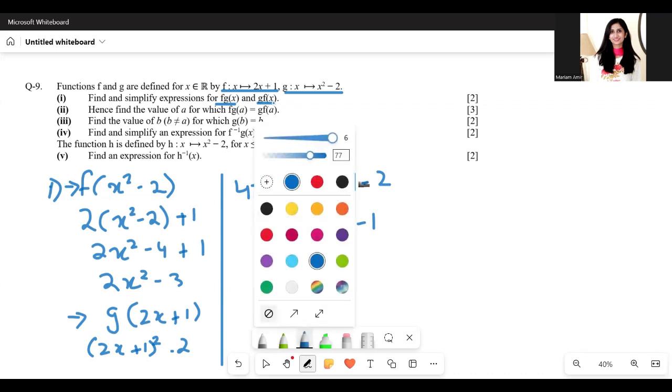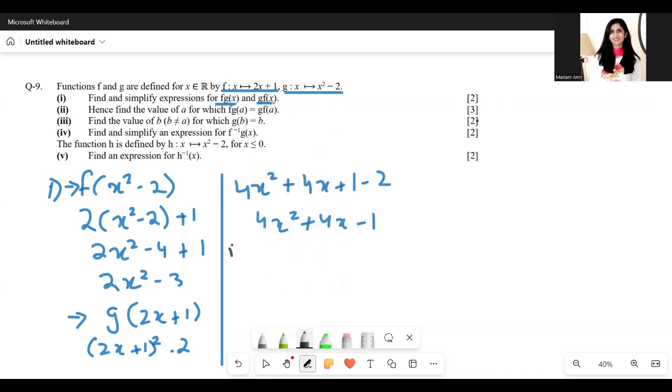Next is part 2, which is: hence find the value of a for which f(g(a)) equals g(f(a)).